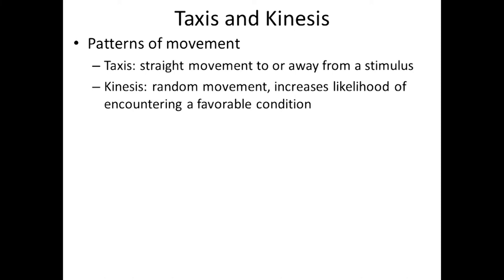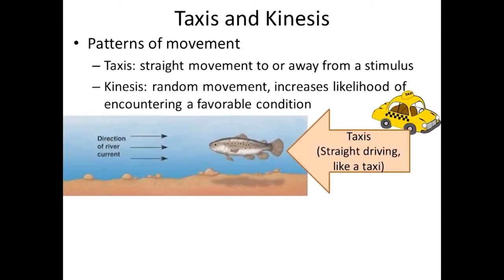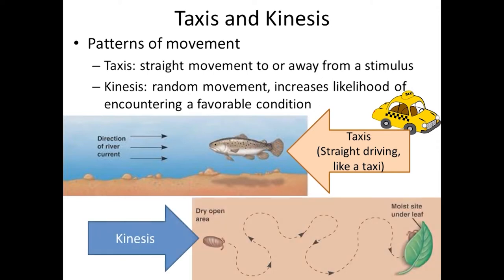Another method of response utilized by some organisms is movement. Movement can either occur as taxis or kinesis. Taxis refers to movement in a straight line — you can think of it like a taxi that generally drives in a straight line towards its destination. Kinesis refers to random movement. In the picture shown, a bug moving in a form of kinesis has a zigzaggy pattern that doesn't seem as directed as a fish moving using taxis.